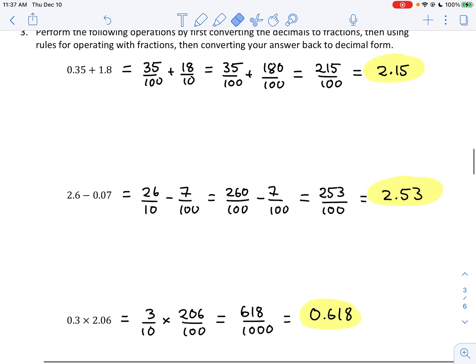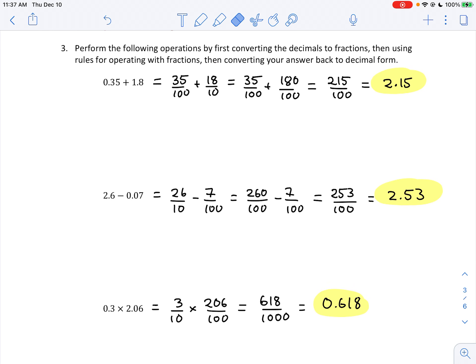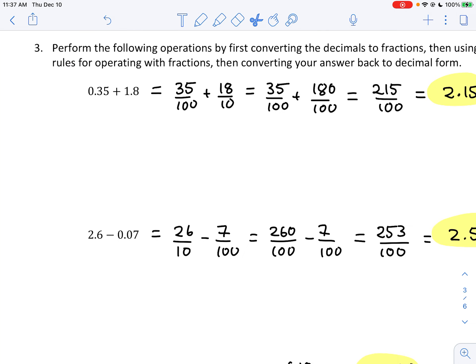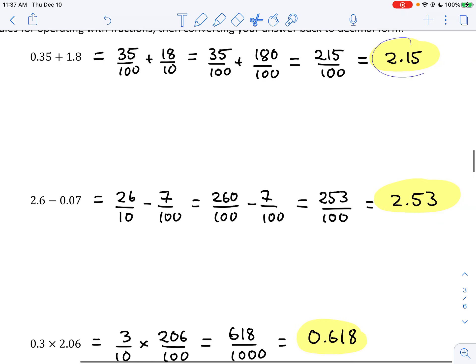Number 3. Typically, there were no issues with number 3. Some people struggled to convert 1.8 to an appropriate fraction. It's either 18 tenths or 180 hundredths, either way you want to think about it. But once you have a common denominator, then we can add these together and then convert back to a decimal.